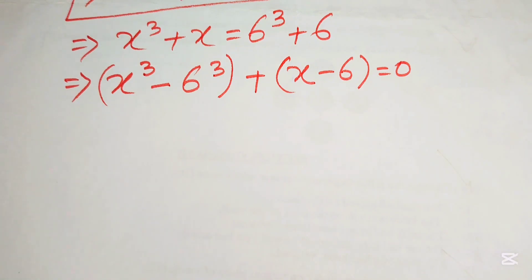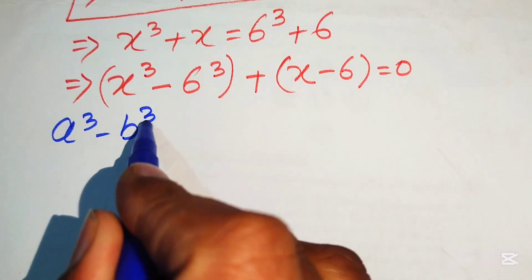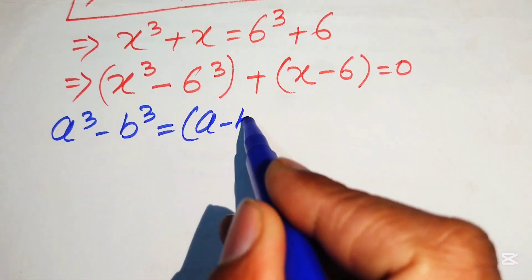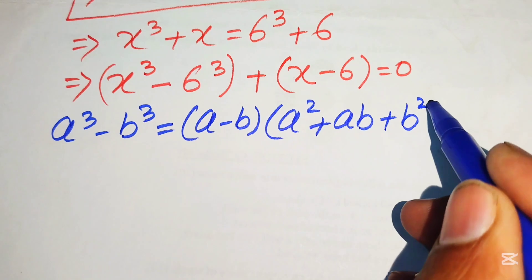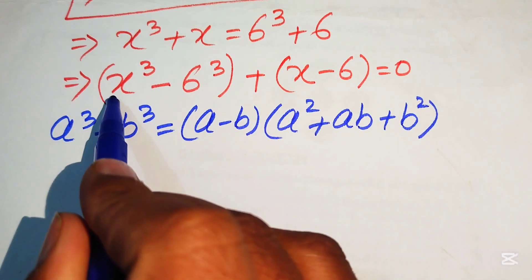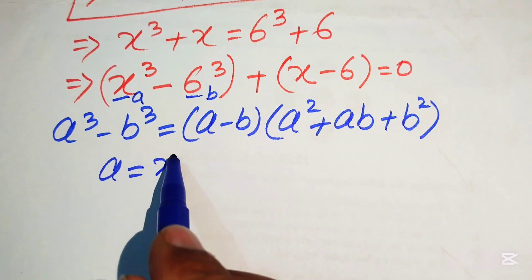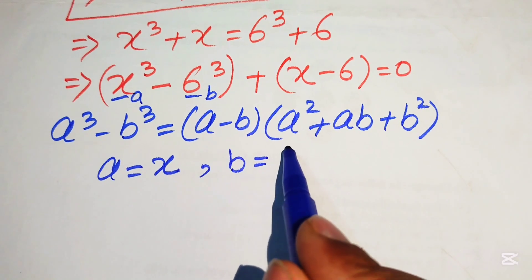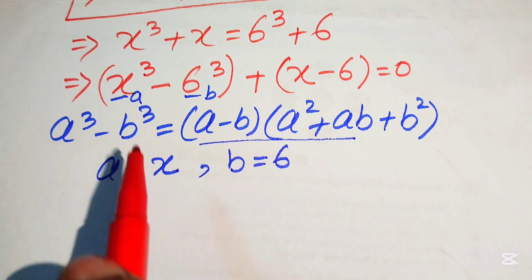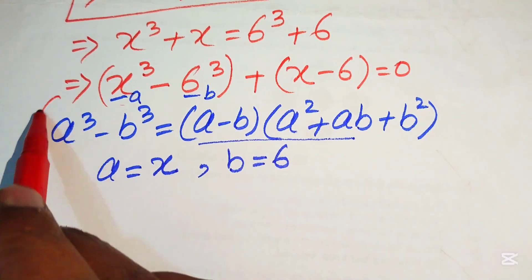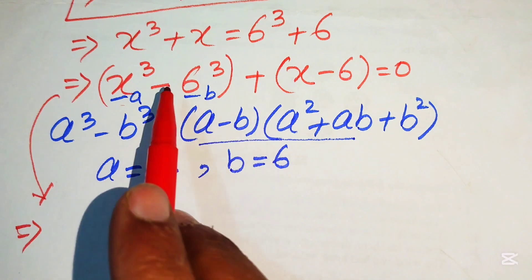Now we apply the difference of cubes formula: a³ minus b³ equals (a minus b)(a² plus ab plus b²). Here a equals x and b equals 6. Substituting these values into the formula gives us the factored form of the cubic part.